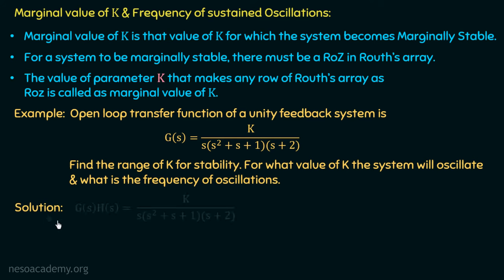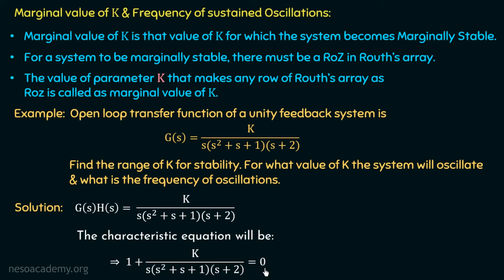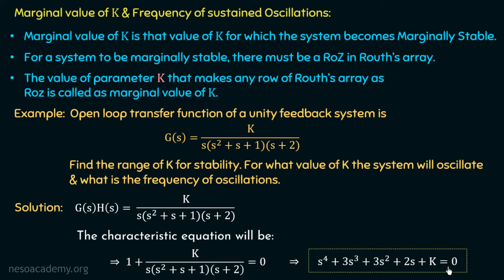We are given G(s) = k / [s(s² + s + 1)(s + 2)]. Since this is a unity feedback system, H = 1, and the characteristic equation is 1 + G(s) = 0. Taking the LCM, the characteristic equation becomes s⁴ + 3s³ + 3s² + 2s + k = 0. This is the same characteristic equation discussed in the last lecture, where we found the range of values of k for stability.